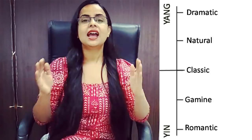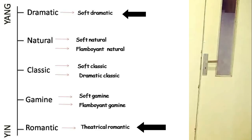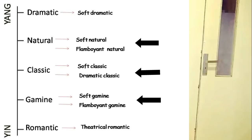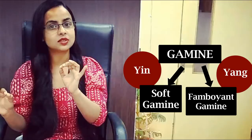Within these 5 major types, there are further subcategories that make a total of 13 body types. Dramatic is extreme Yang — extreme masculine — and Romantic is extreme feminine. These two have only one subcategory each. The remaining three types each have two subcategories: one slightly inclined toward Yang and one slightly inclined toward Yin. For example, if Gamine has a little more Yang feature, it becomes one particular subtype; if it has a little Yin factor, it becomes another subtype.